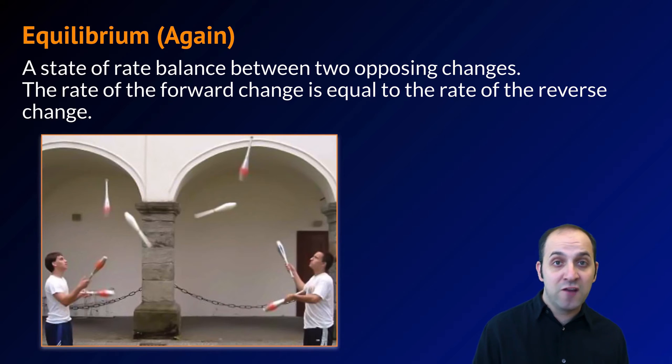Equilibrium is not restricted to chemistry. Here are two jugglers. If those jugglers are successfully juggling these pins back and forth, they are in an equilibrium. The rate at which they catch pins is equal to the rate at which they throw pins back to each other. As long as they continue to do this, they can continue to juggle as much as they want. You will see equilibrium in all sorts of systems and all sorts of places in your life.